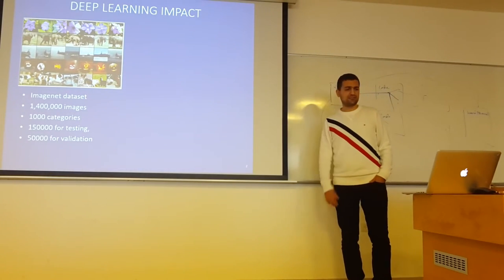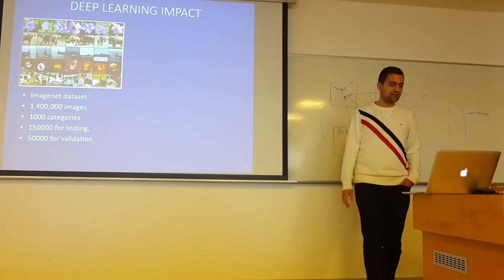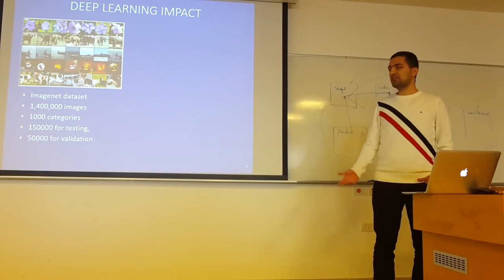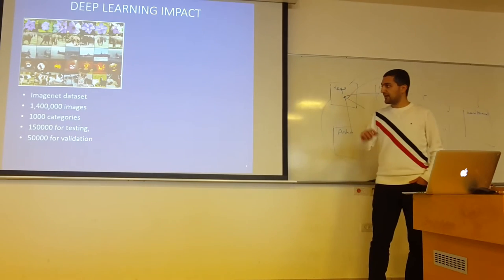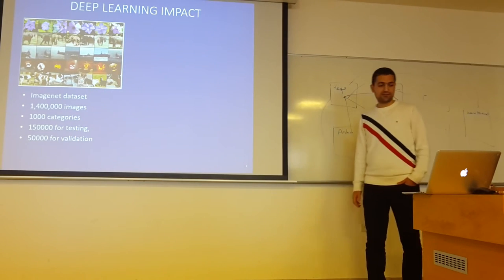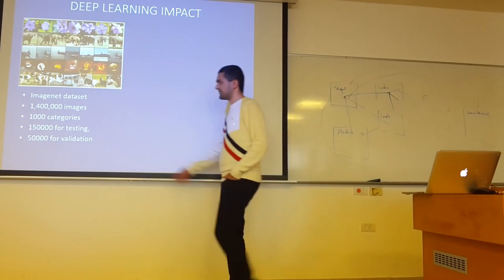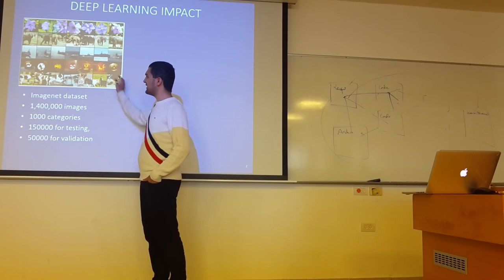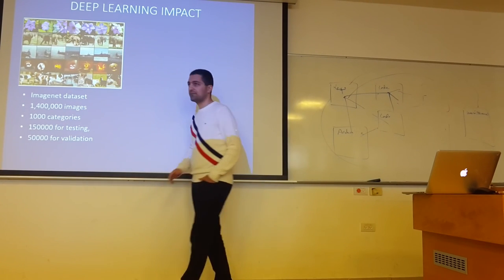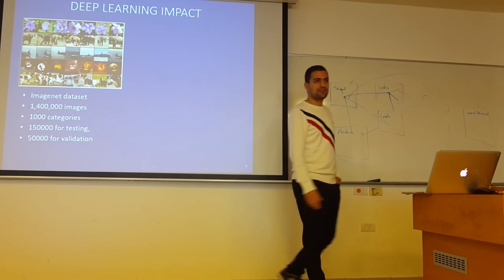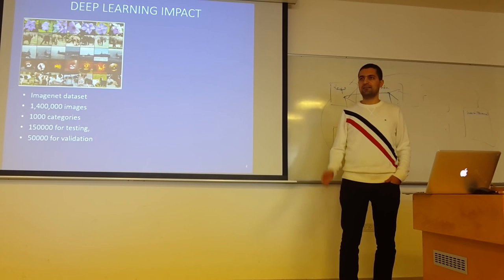Deep learning is today considered the best method in machine learning and in computer vision — it gets state-of-the-art results in many benchmarks. For example, in ImageNet, which is an image classification problem, since 2012 all the state-of-the-art methods are deep learning, and they just beat one another, and no one dared to think that someone would be able to get...